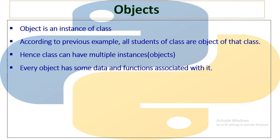A class can have multiple objects, and class is a collection of objects. The specialty of an object is that it has some data and functions associated with it. In a class there can be two types of attributes: some data belongs to only the class, some data belongs to only the object, and some data belongs to both. There is certain data which only the object can access and not the class name, and some data which can only be accessed by the class name and not the object.